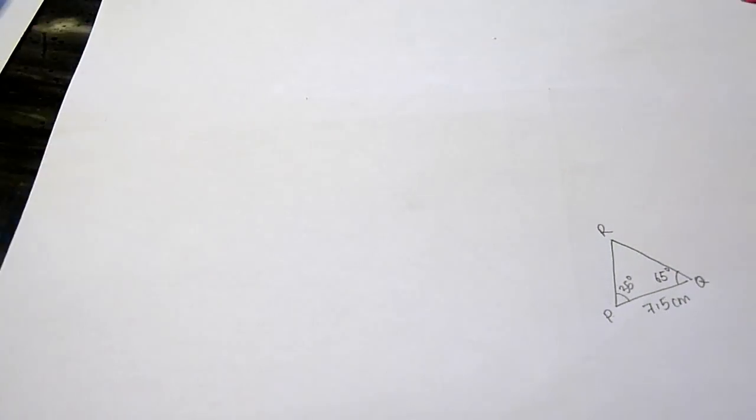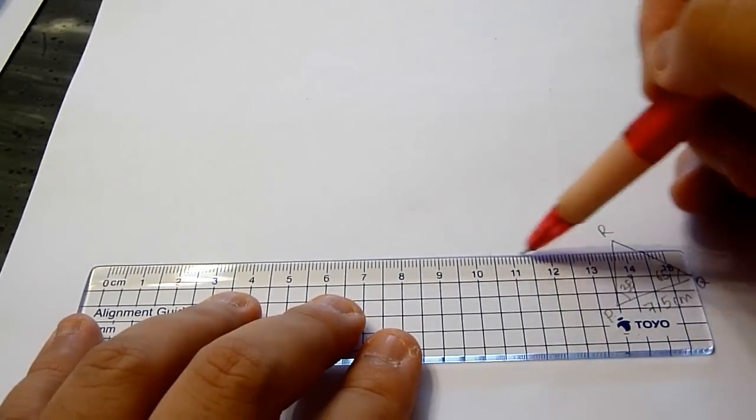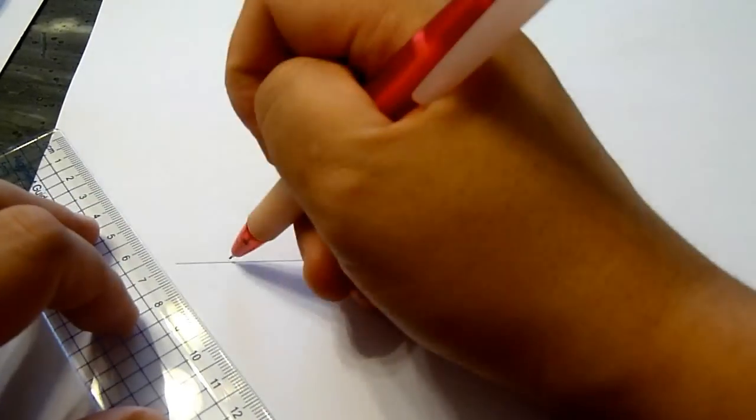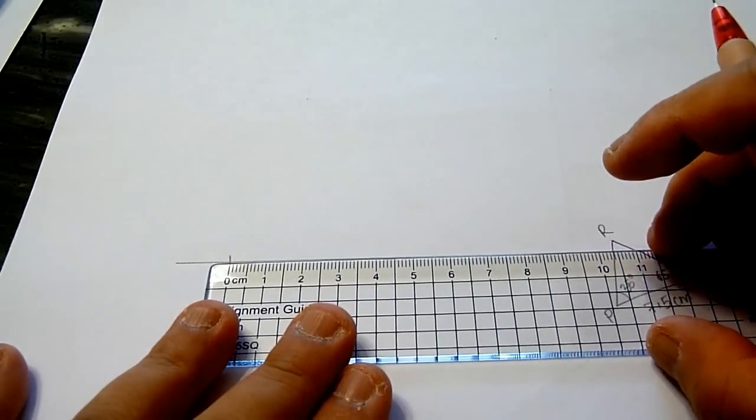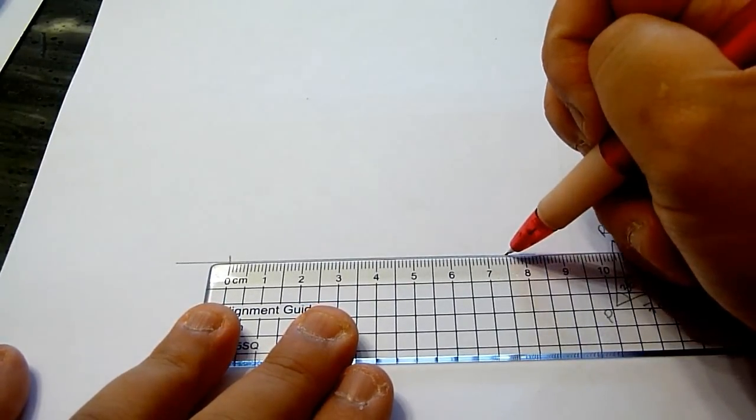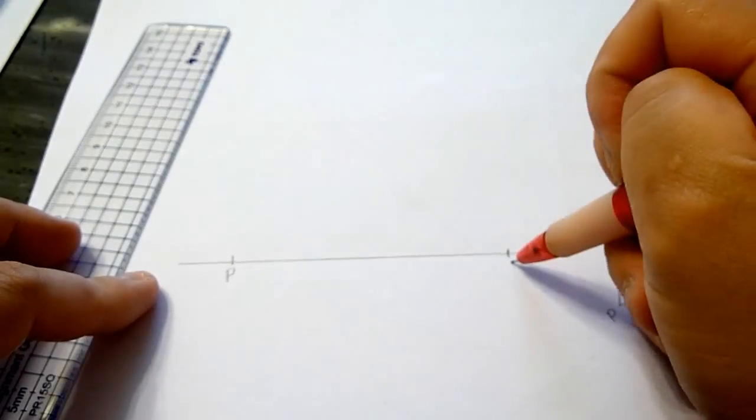Next, we shall draw the base of the triangle measuring 7.5 cm and mark the points P and Q.